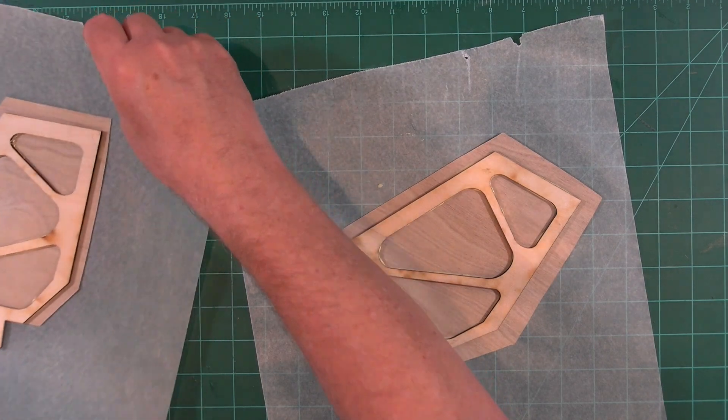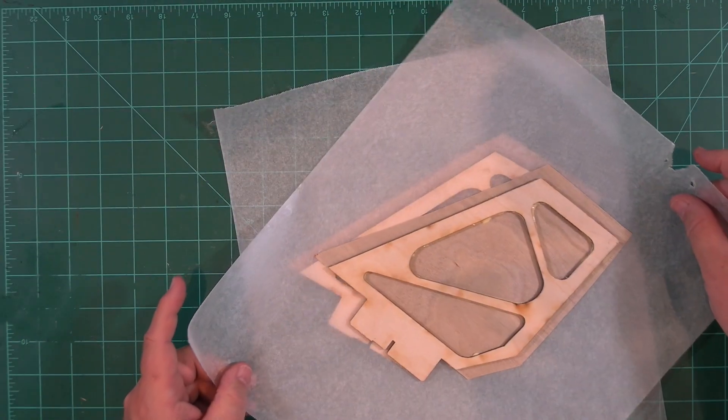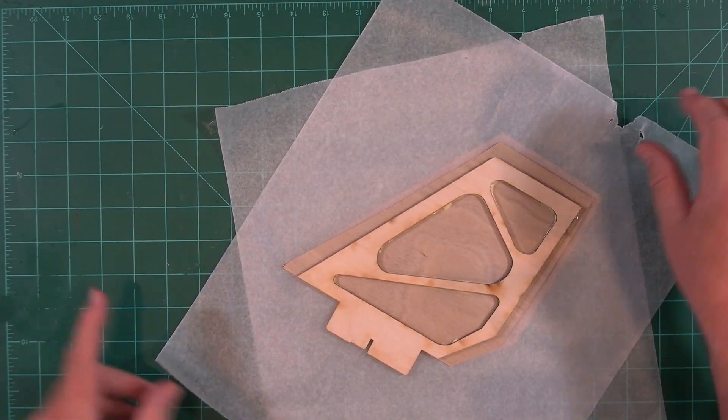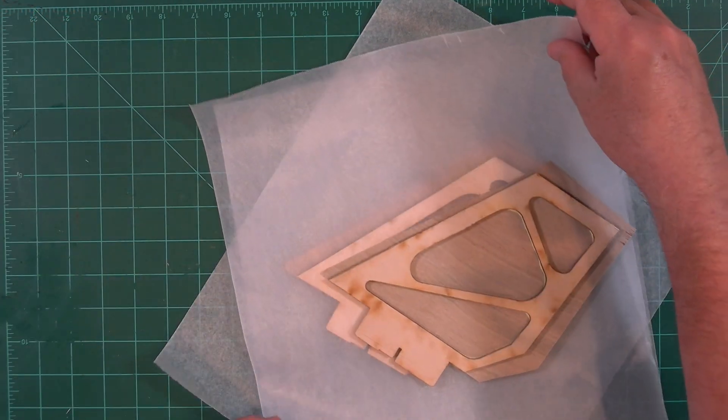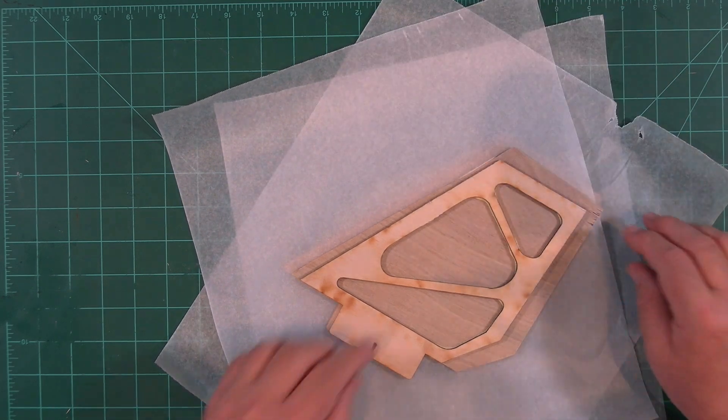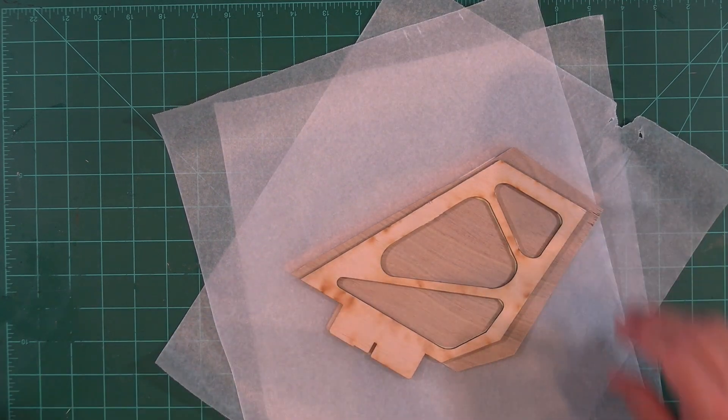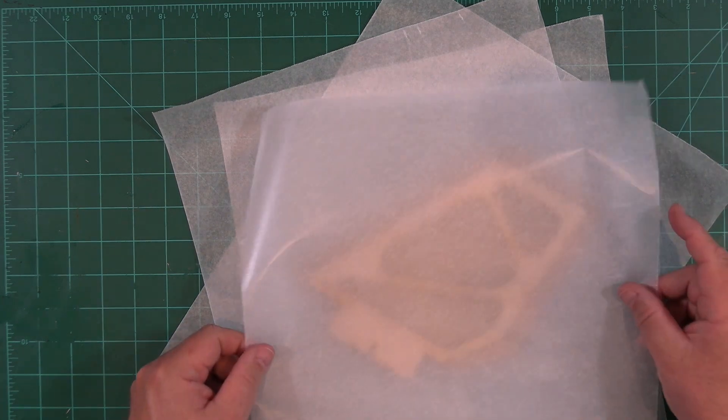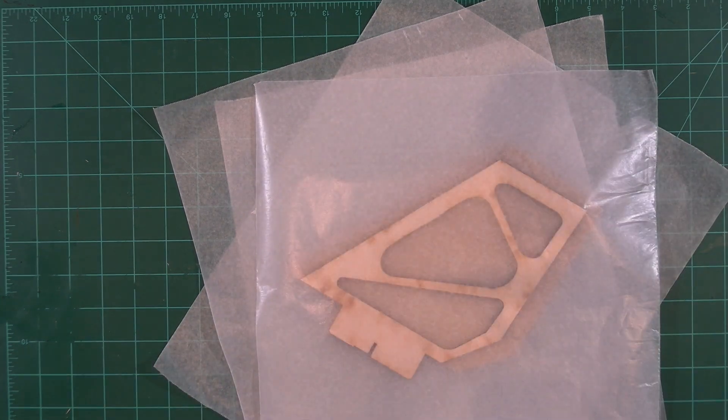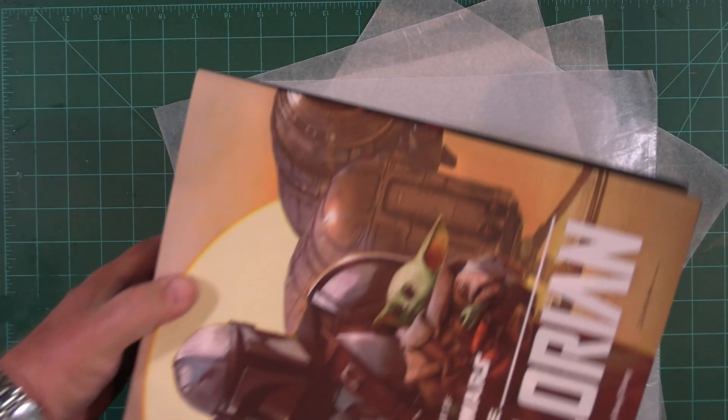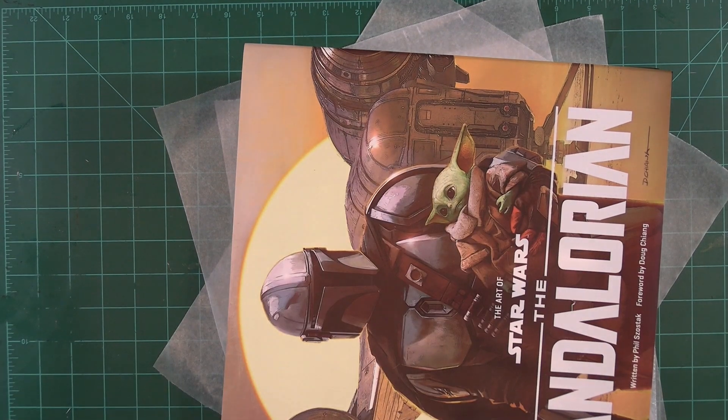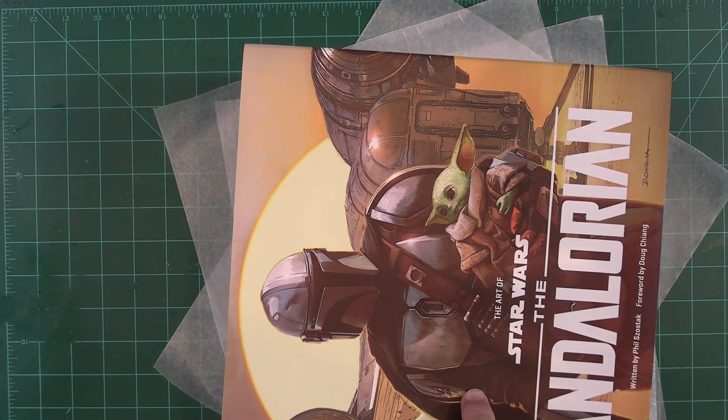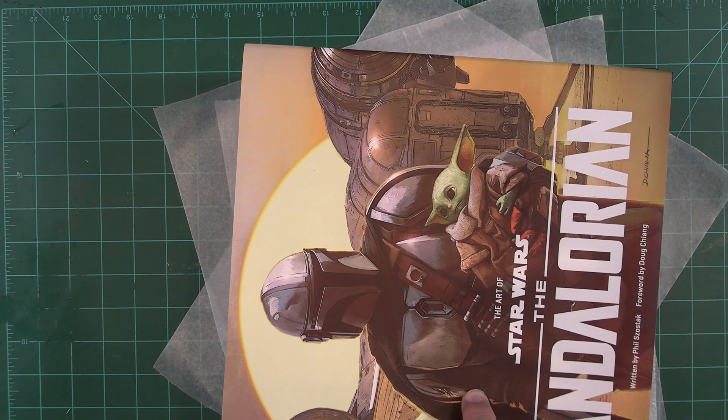Now that we have the three fin skins glued up, I'm going to carefully stack them on top of each other. Place a sheet of waxed paper over that, and then we're going to set a heavy stack of books on top of that. Now you wouldn't want to use books from the prequel trilogy here because that would just screw up your fins.